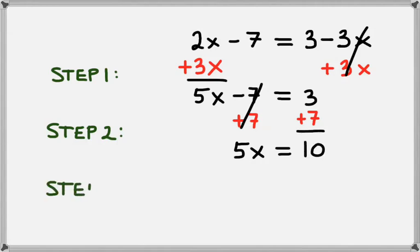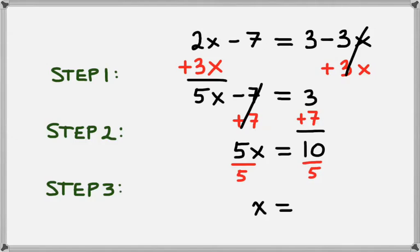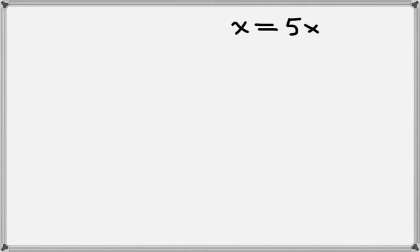And the final step is to get x by itself. We have 5 multiplying x, so we need to divide by 5. We do that on the right hand side as well. That leaves us x equals 10 divided by 5, which is 2. So our final answer is x equals 2.